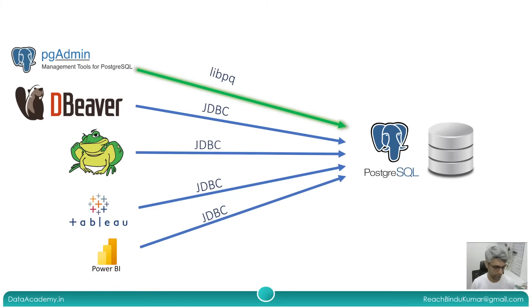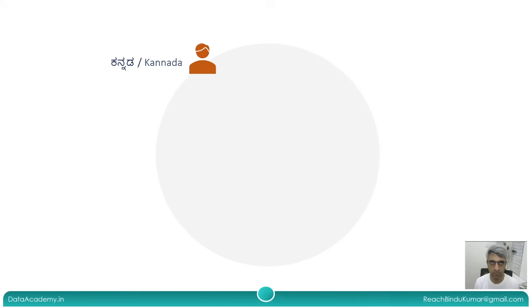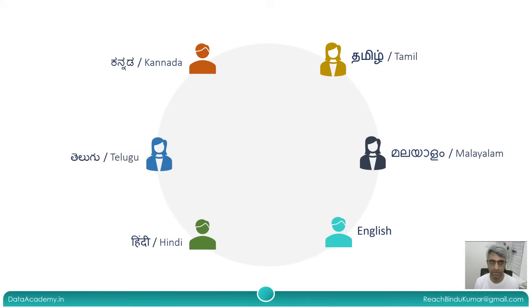To understand the difference between libpq and JDBC, we need to take an analogy from the real world — and for this, we are going to talk about languages that people speak around the world. Let's consider a group of people in which every person speaks a different language. These are languages primarily spoken in the southern part of India. We have six people who all speak different languages and who have difficulty communicating with each other.